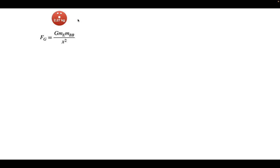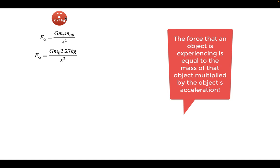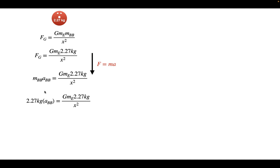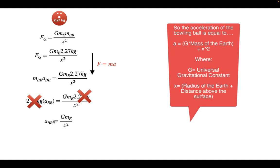I'll plug in the mass of the bowling ball to get an expression for the gravitational force. Since force equals mass times acceleration, I substitute in the bowling ball's mass on the other side of the equation. The mass of the bowling ball cancels out on both sides, leaving us with the result that the acceleration of the bowling ball equals big G times the mass of the earth divided by the distance squared.